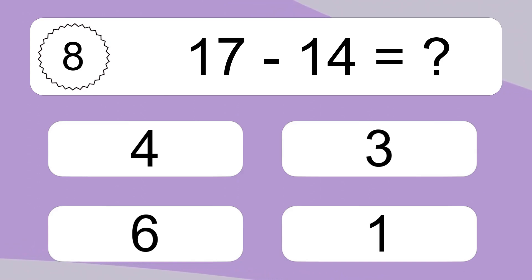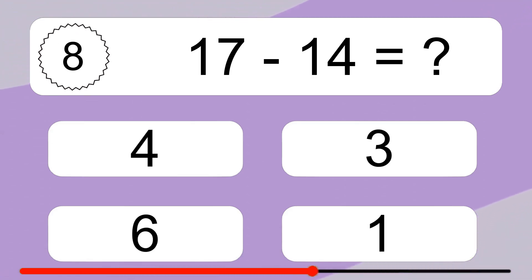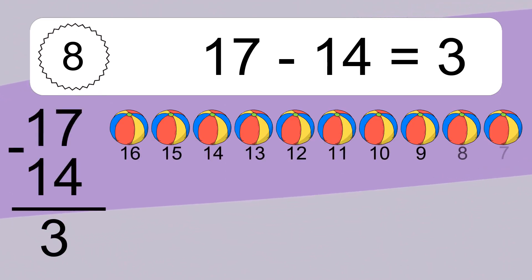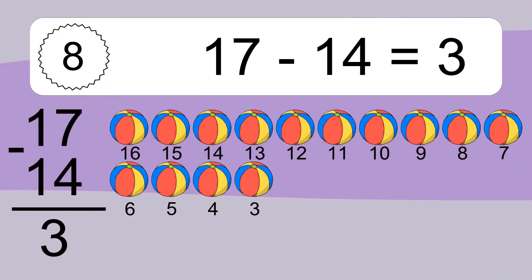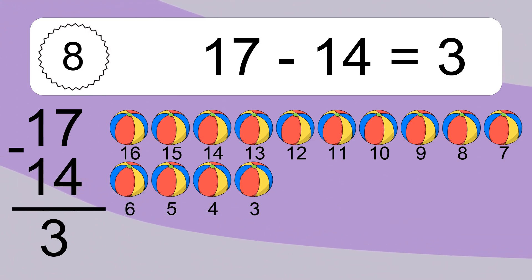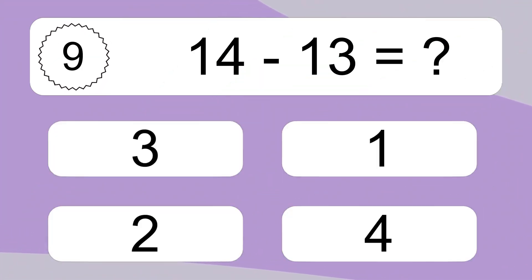17 minus 14 equals what? 17 minus 14 equals 3. Let's count it. 16, 15, 14, 13, 12, 11, 10, 9, 8, 7, 6, 5, 4, 3.